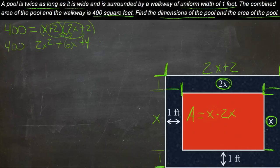So we have 400 is equal to 2x squared plus 6x plus 4. Divide everything by 2. We'll get 200 is equal to x squared plus 3x plus 2. Subtract the 200 from both sides and we'll get x squared plus 3x minus 198 equals 0.